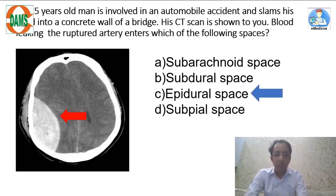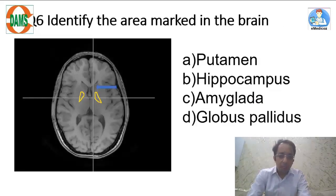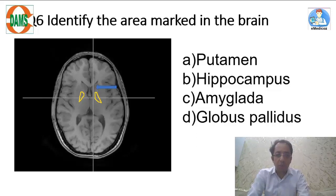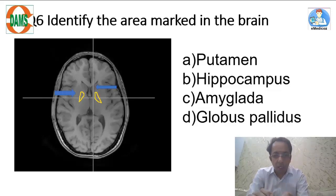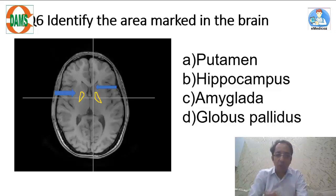Now identify the marked area in the brain. The blue arrow points to the head of the caudate nucleus. Another thick blue arrow marks the putamen. The yellow-marked area seen in the image is medial to the putamen, and this is called the globus pallidus. The answer is globus pallidus.